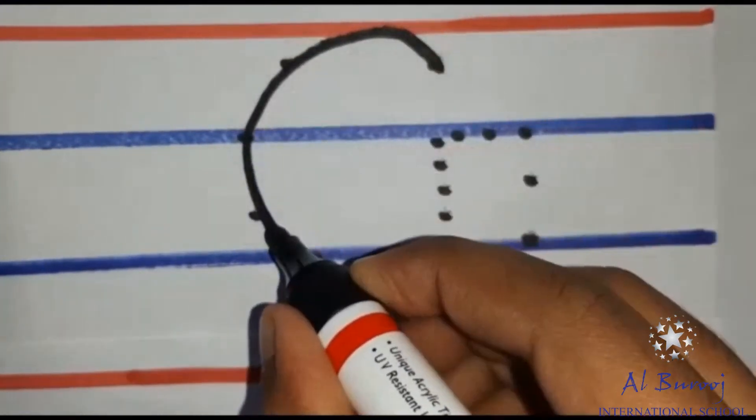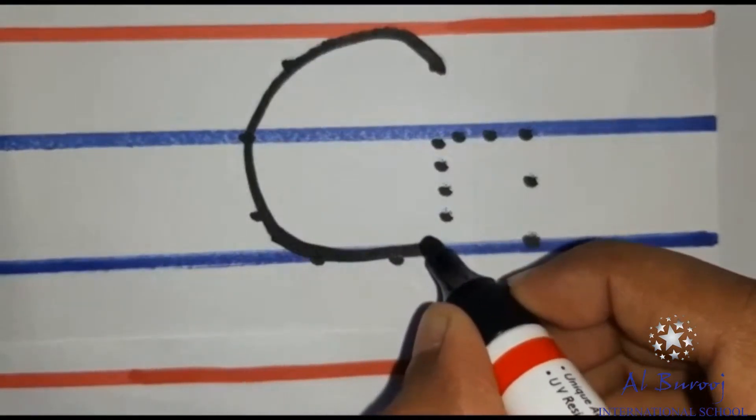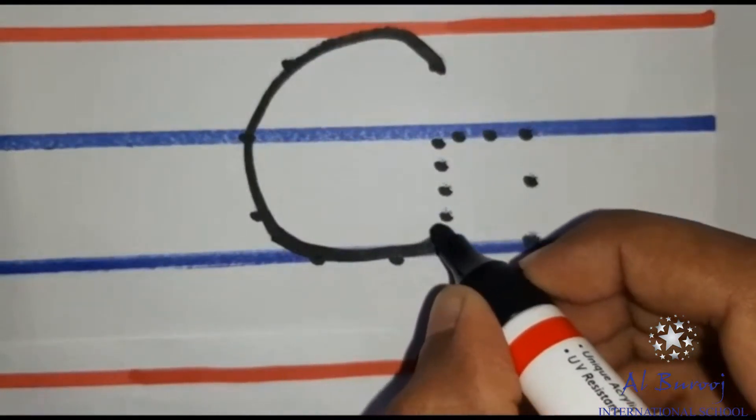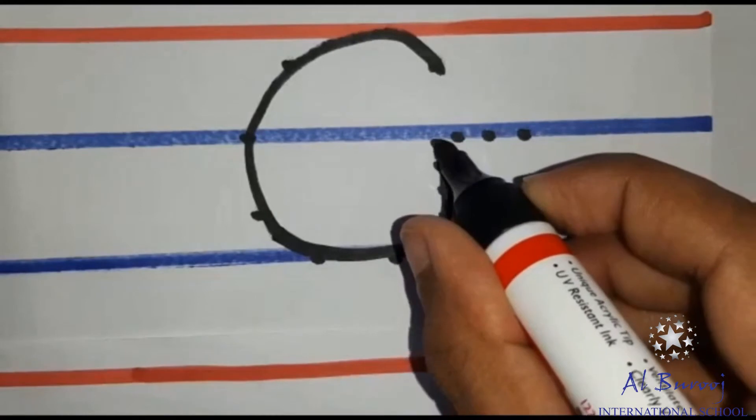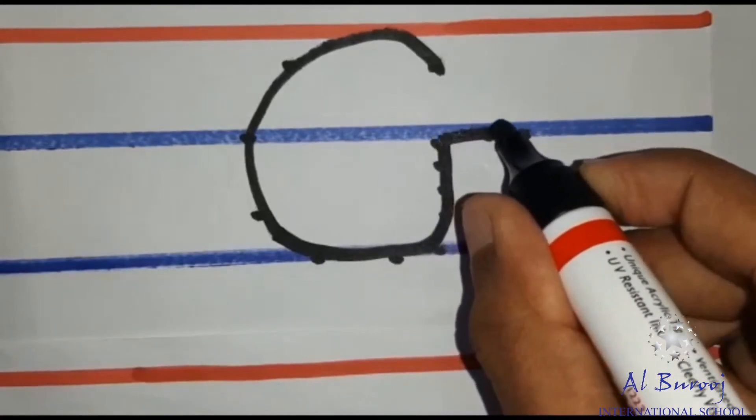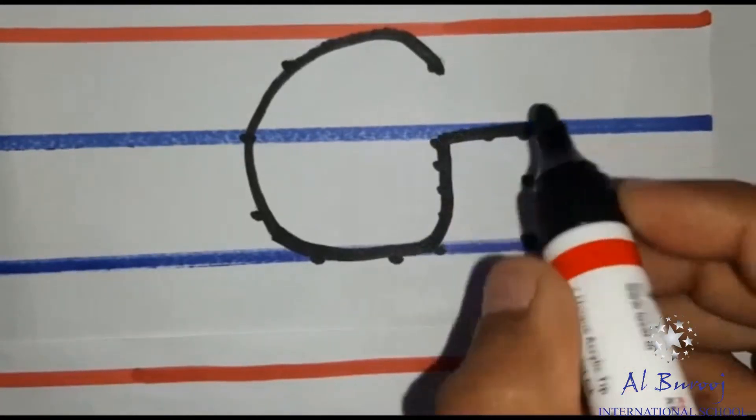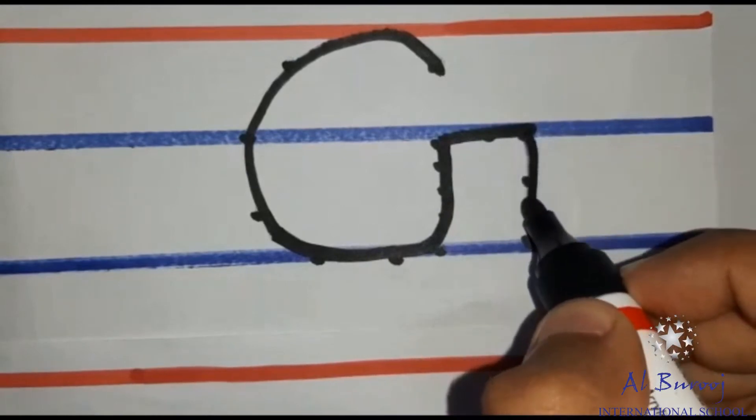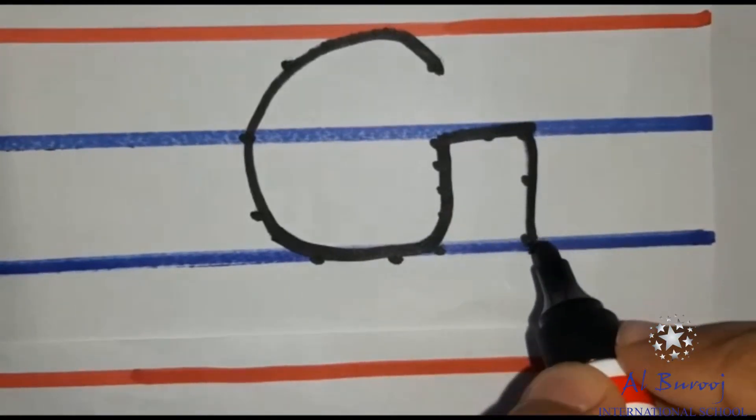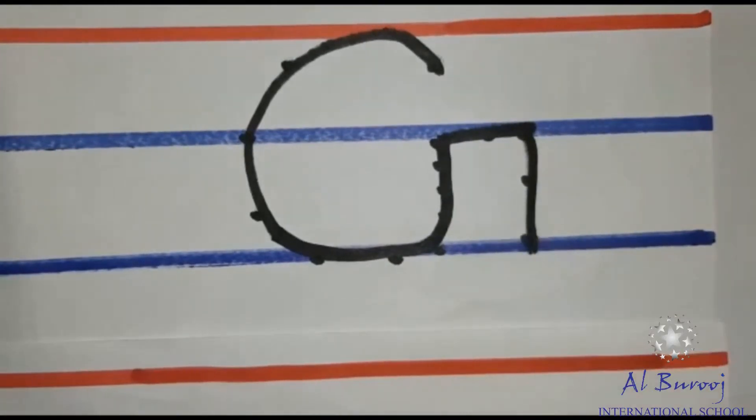Without lifting your hand, trace the dot till the second line. Now, draw the sleeping line on the second line and trace the dot till the third line in the form of a standing line. This is how we trace the letter G.